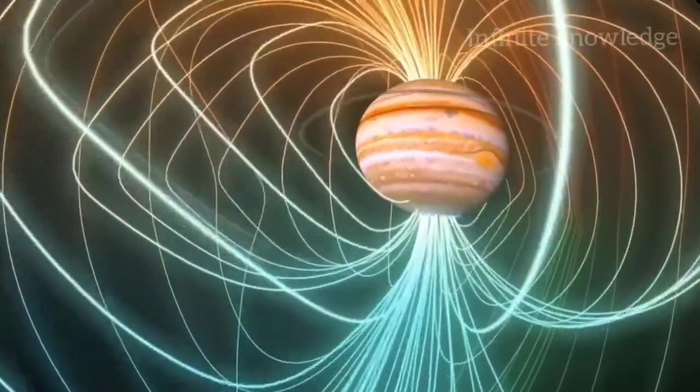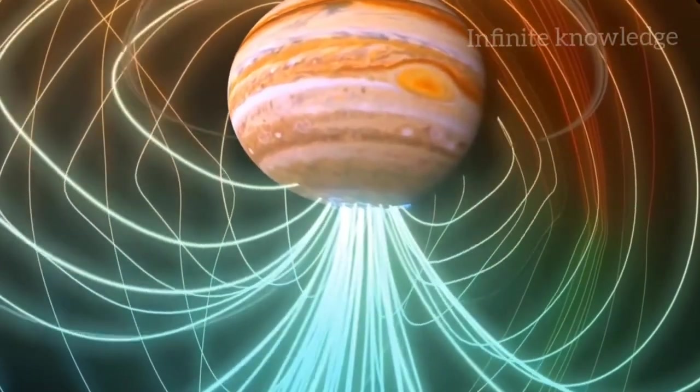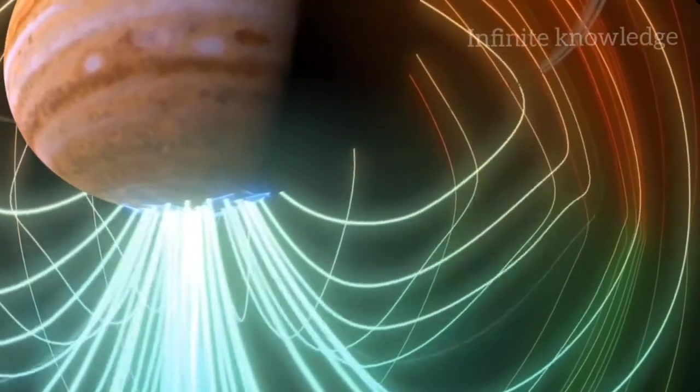Jupiter has metallic hydrogen flowing in its core, creating the dynamo to power a magnetosphere 20,000 times stronger than Earth's.